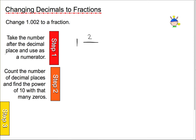Count the number of decimal places to find the power of 10 with that many zeros. So, if I take a look up here, 1, 2, 3 decimal places mean that I need a power of 10 that has 1, 2, 3 zeros. So, again, 3 decimal places here means I need 3 zeros in my denominator.